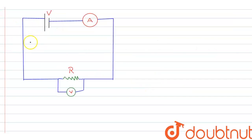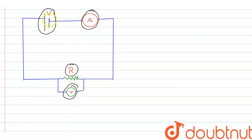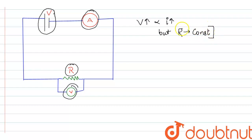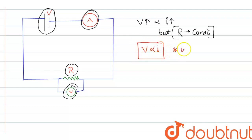The next part is how Ohm's law can be verified experimentally with a circuit diagram. The circuit consists of a battery, an ammeter, a resistance, and a voltmeter. As we increase V, because current is proportional to V, the current also increases while R remains constant. This verifies that V is proportional to I, with the key condition being that temperature is kept constant.